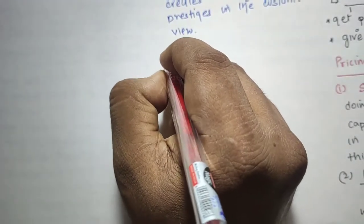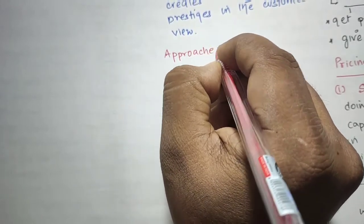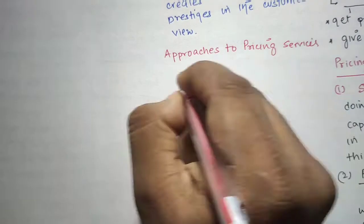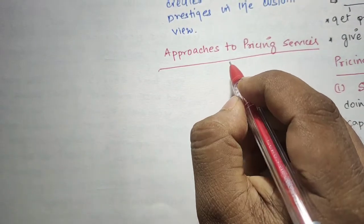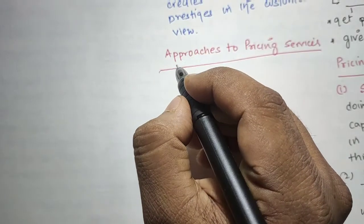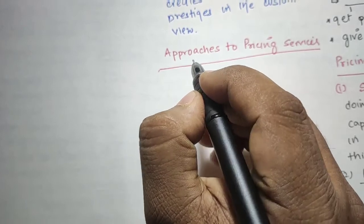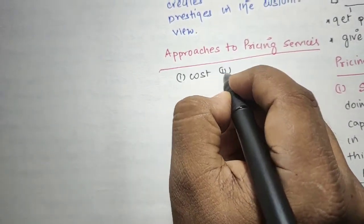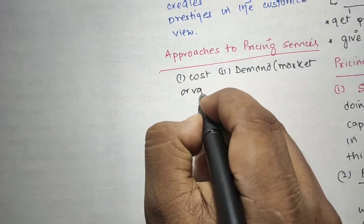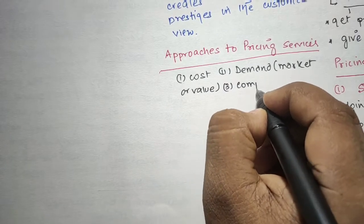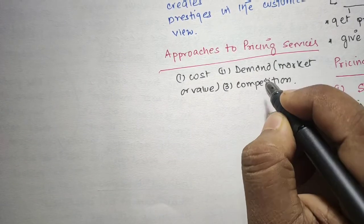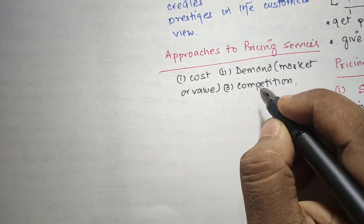Now let us discuss the approaches to pricing services. Having set pricing objectives, the firm has to do proper pricing. For proper pricing, the firm has to think about three major structures: cost, demand which may be market or value-based, and competition. The firm can adopt any one or more structure with an appropriate proportion in combination.